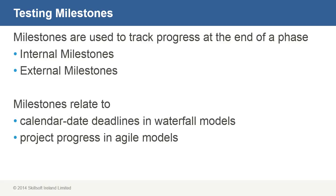When it comes to software models, milestones typically align with calendar deadlines in waterfall models. In the Agile model, milestones relate to project progress. This means that the testing criteria that was established when the milestone was defined has to be satisfied. Criteria could be quality related or functionality related, but it has to be met before the milestone can be considered to be complete.